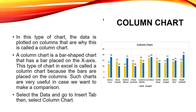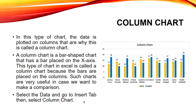Our first chart type is column chart. It is named column because we use vertical bars for representing our data. The data is plotted on columns — that is why it is called a column chart. A column chart has bars placed on the x-axis, parallel to the y-axis, and is very useful for making comparisons, such as comparing marks of maths and science. To insert it, select the data, click Insert, then select the column chart option.